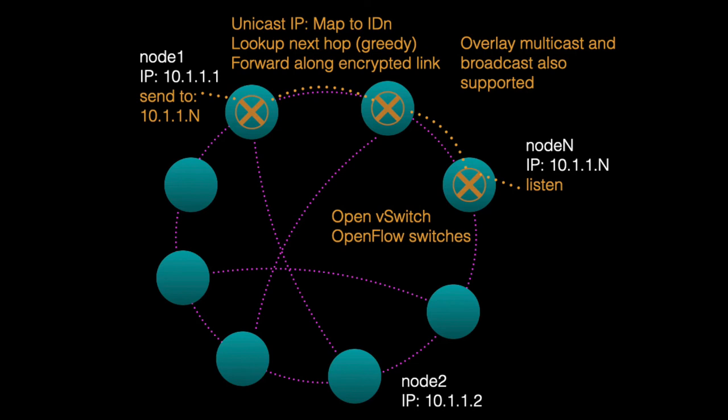Every pairwise communication has its own rules in the network, allowing use of all possible links without loops. These rules are managed dynamically as nodes join and leave, without any administrative action. The network also supports overlay multicast and broadcast for messages like ARP.